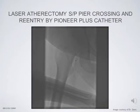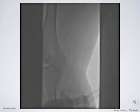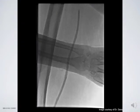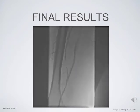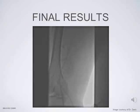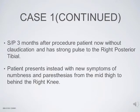Laser atherectomy was performed status post-PIER crossing and reentry by the Pioneer Plus catheter. After this, a channel goes through the vessel. Post-balloon angioplasty was performed, and the final results show a very good patent lumen, good size, minimal dissections without flow limitation, and excellent flow below the knee. Three months after the procedure, the patient was still without claudication and had plus-two pulses in the posterior tibial vessel.